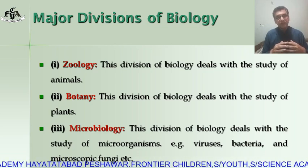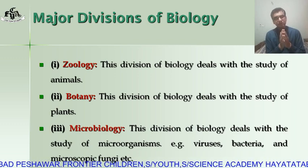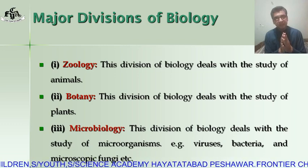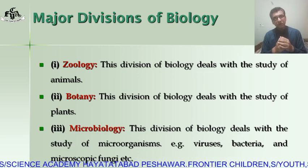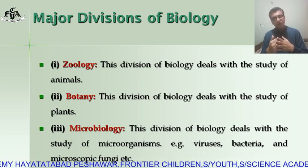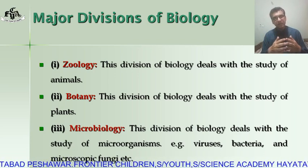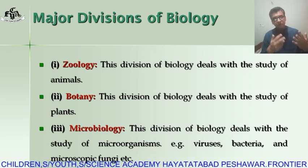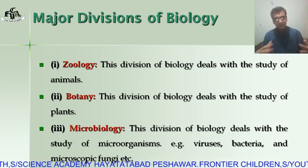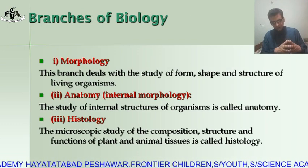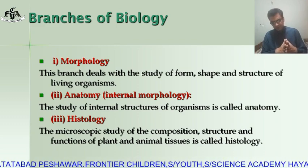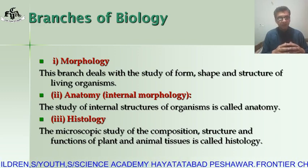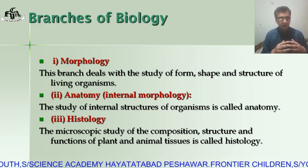Microorganisms are those organisms that cannot be seen with the naked eye. They can only be seen under a microscope — a compound microscope or electron microscope. Examples include viruses, bacteria, and microscopic fungi. Their study is called microbiology. In order to study all aspects of life, the major divisions of biology are further divided into different branches. Let's explain these branches one by one.